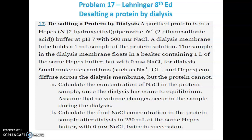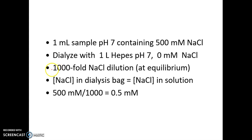The first question asks us to calculate the concentration of sodium chloride in the protein sample once dialysis has come to equilibrium, assuming no volume change occurs in the sample during dialysis. We have 1 ml of sample in a 1 liter buffer — that is a 1000-fold dilution. So at equilibrium there is a 1000-fold dilution of the sodium chloride.